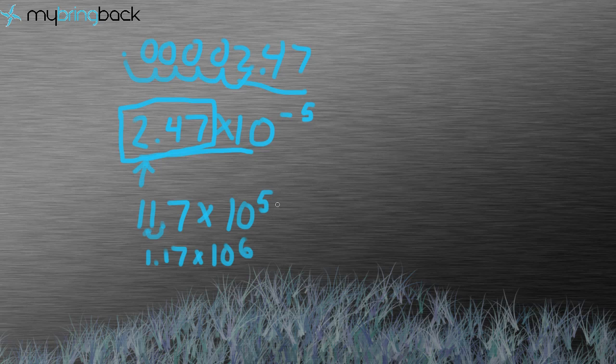Now what these positive numbers are is that the number is larger than 1. When it's a negative, it means it's a decimal place. It's less than 1. We have 0s.